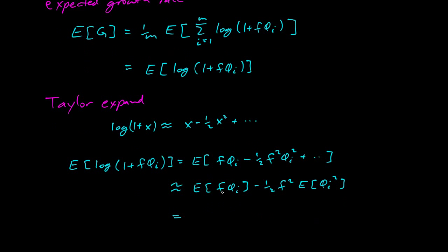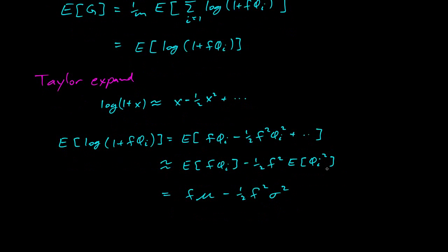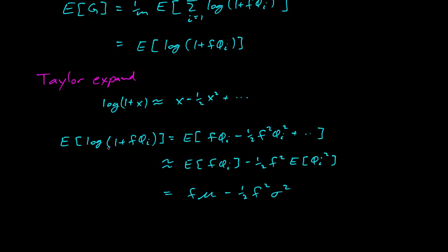So this is about equal to the expected value of f·φᵢ minus 1 half f squared, expected value of φᵢ squared. And so what's the expected value of f times φᵢ? Our μ was the mean, so we get f times μ minus 1 half f squared, expected value of φᵢ squared. That's the variance. So we get the variance here. And there we go. So now we have the expected value of the growth. So this is the expected value of the growth equals f·μ minus 1 half f squared σ squared.